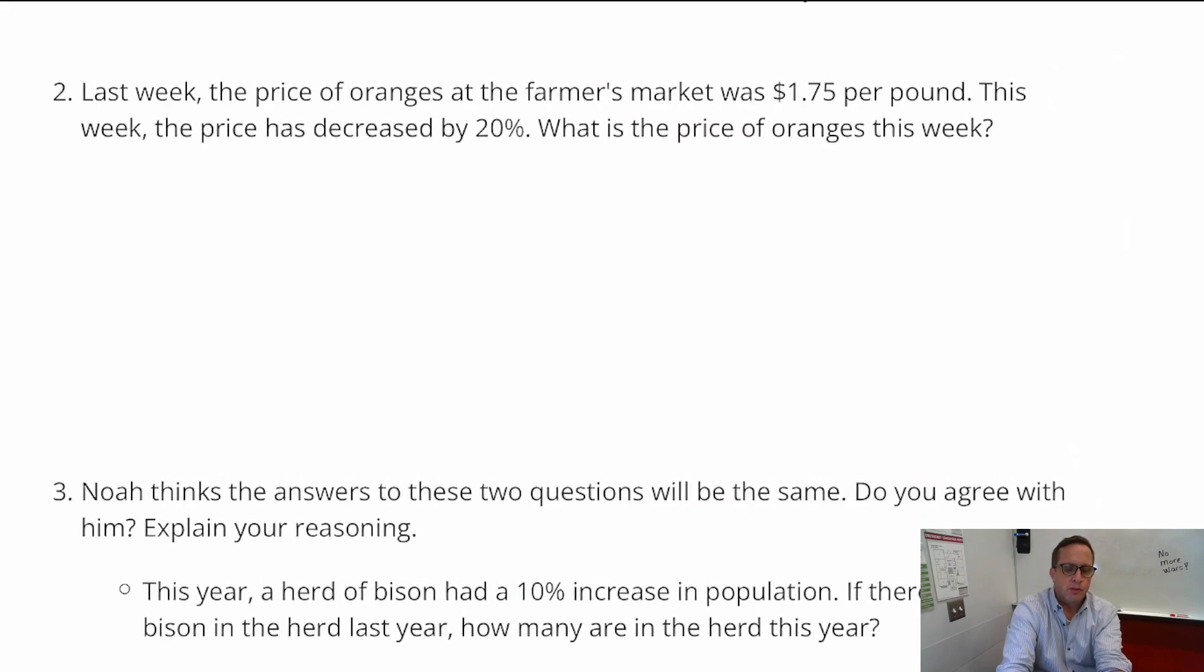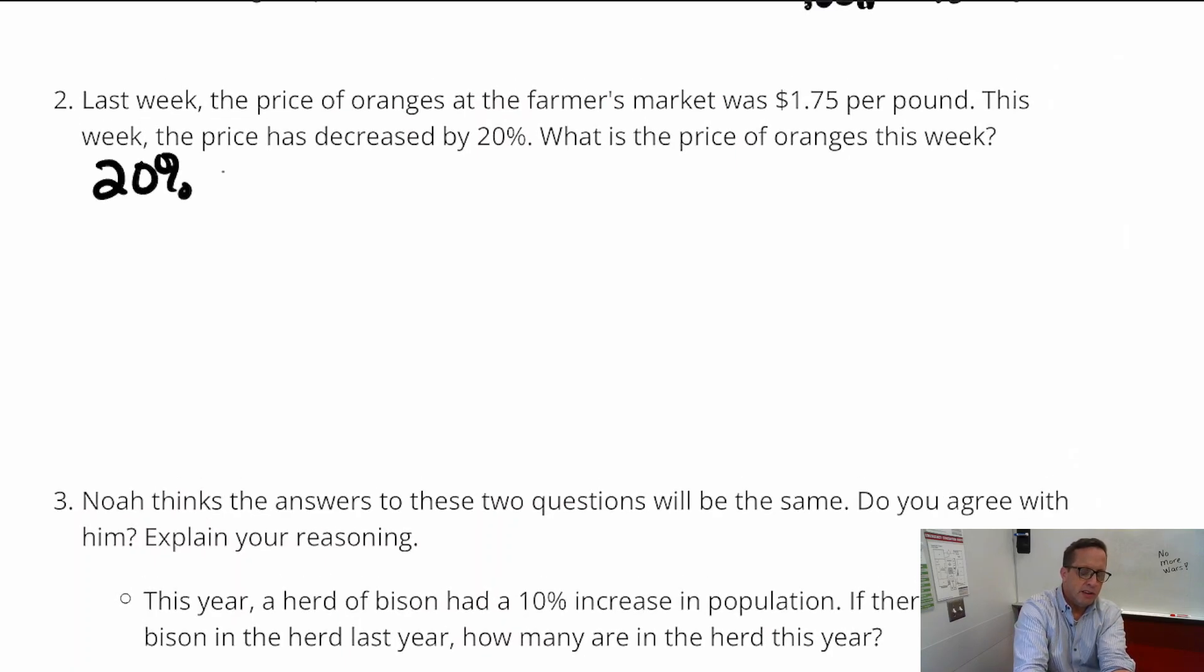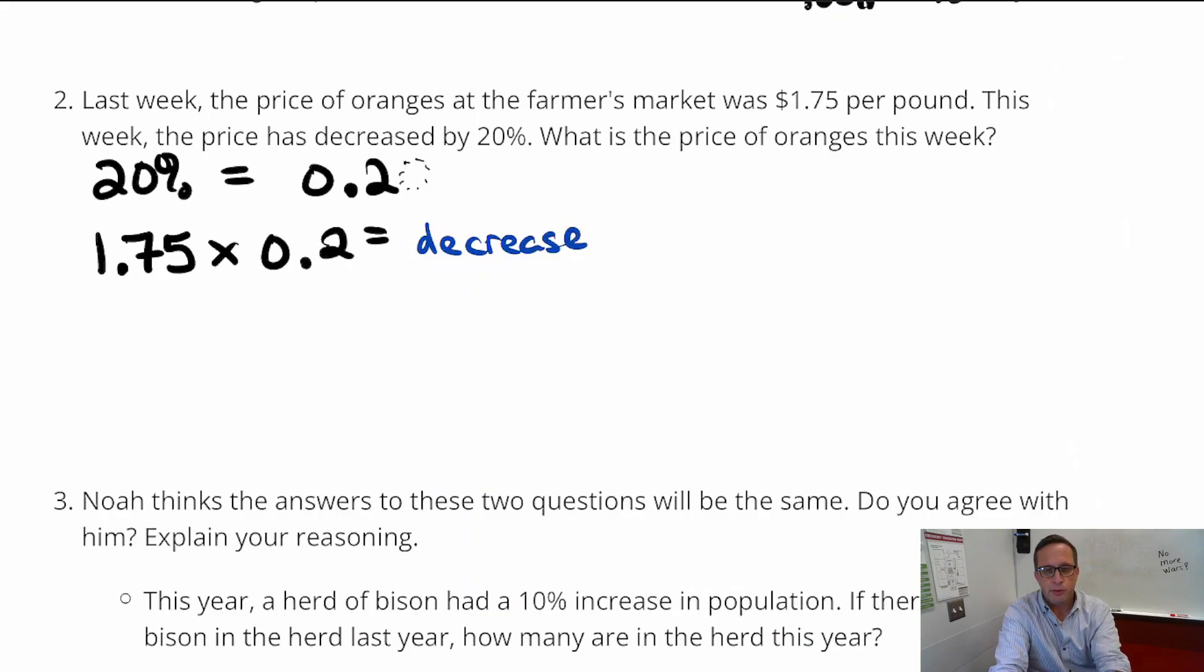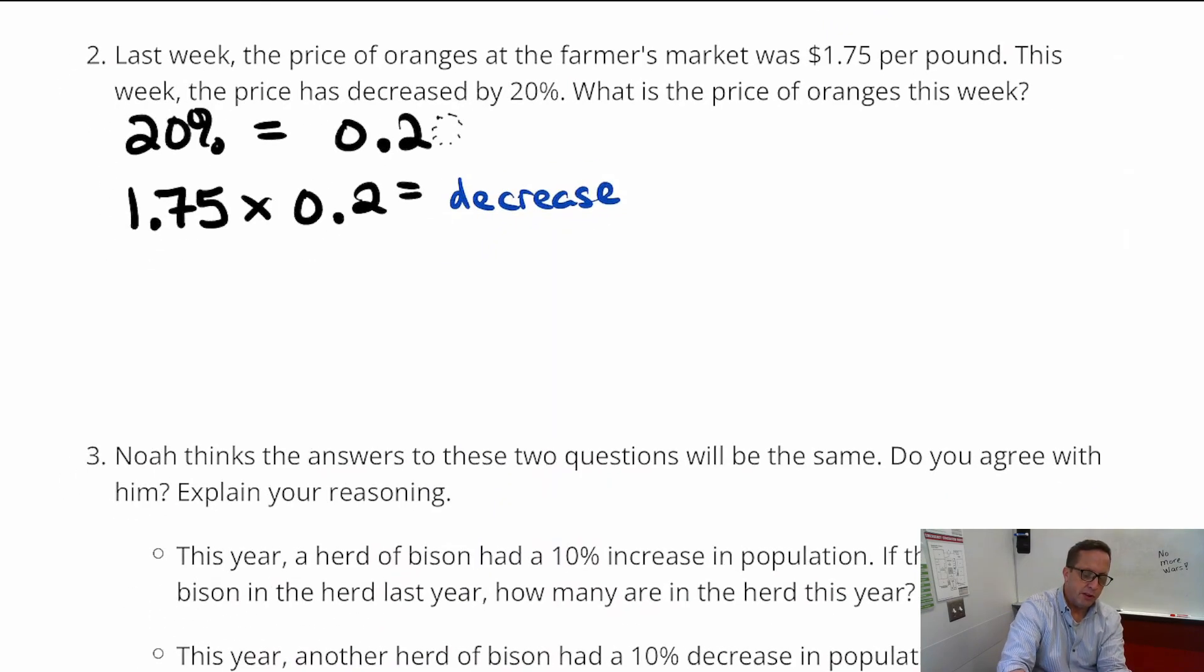Alright, so we could just figure out what 20% is. 20% is equal, as a decimal, is equal to 2 tenths, right? So if we just do $1.75 times 2 tenths, what we're going to get is the decrease. That's not going to be the price, it's just going to be how much the price decreased. So that's what we're going to do first.